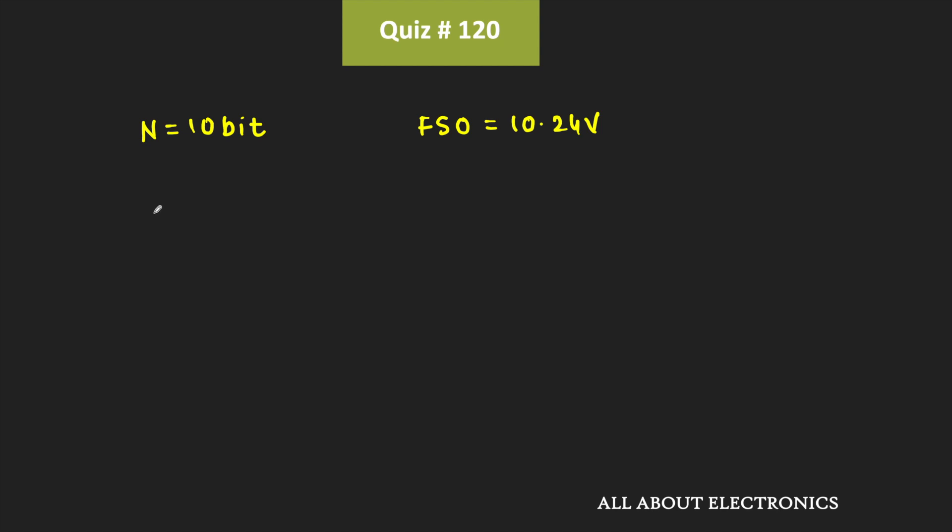So as you are aware, the 1 LSB is equal to this full-scale output voltage divided by 2^N-1, that is equal to 10.24V divided by 2^10-1, which is roughly equal to 10mV. That means 1 LSB corresponds to 10mV.